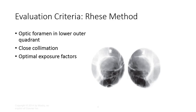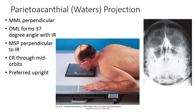Close collimation with optimal exposure factors are required for high contrast imaging to visualize the optic foramen. The waters view shares the same positioning as other waters views covered this semester. Place the MSP and MML perpendicular to the IR. This should cause the OML to form a 37 degree angle with the IR. Center through mid-orbits, preferably upright in case there may be air-fluid visualization of the sinuses. Petrous ridges should be projected below the maxillary sinuses. This view best demonstrates the superior orbital margin.